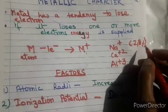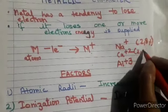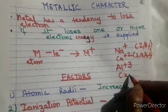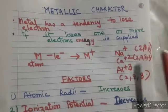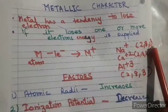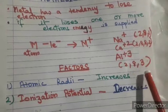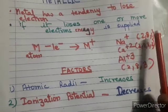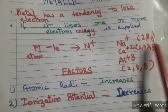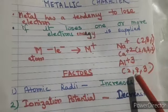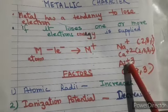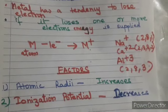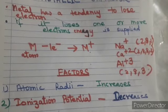Looking at their electronic configurations: Na is 2,8,1; Ca is 2,8,8,2; and Al is 2,8,3. You can see the outermost orbits have one, two, and three electrons respectively. So losing one electron gives +1 charge, two electrons gives +2, and three electrons gives +3. Every time electrons are removed, energy is required — that energy is called ionization energy.